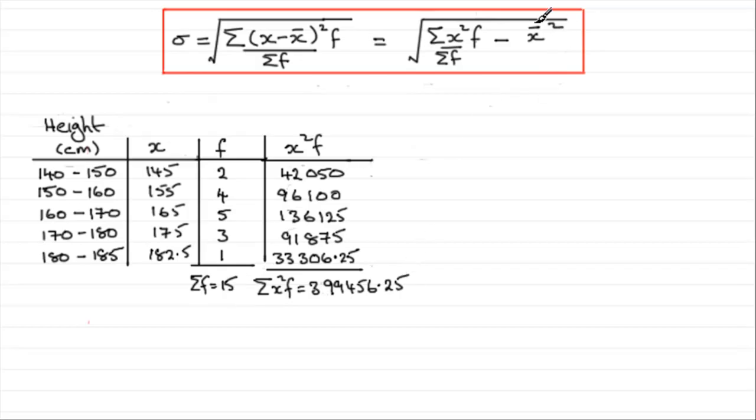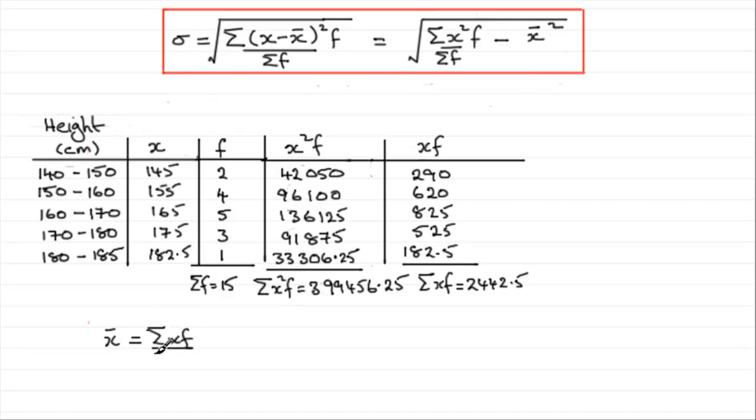So, what else do we need? Well, we need the mean squared, and to do that, we'll just extend the table. We need to work out xf. So, if we do 145 times 2, we're going to get 290, and you should be able to complete the table. If you do, you'll get, which when totaled, will give you the sum of xf. And that comes to 2442.5. So, to get the mean x bar, we need to do the sum of xf, then, all over sum of f. And if you do that, you've got 2442.5 divided by 15, and that comes to 162.83, and so on.